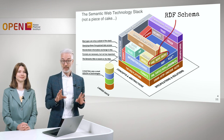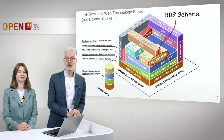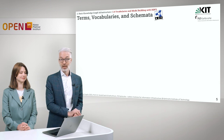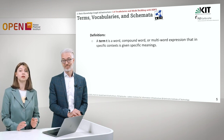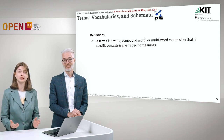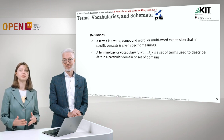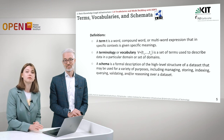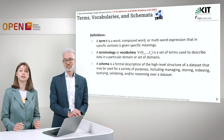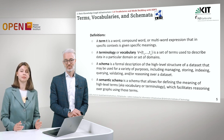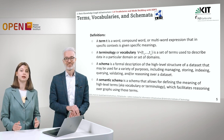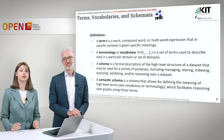This means we are now in the Semantic Web Technology Stack on the next level, where we are building models. Here, we are going to talk about RDF Schema. But first, let's go for some definitions. A term is a word, compound word, or multi-word expression that in a specific context is given a specific meaning. A vocabulary is basically a set of terms used to describe data in a particular domain or set of domains. A schema is a formal description of the high-level structure of a data set used for reasoning, validating, querying, and indexing. A semantic schema is a schema that allows for defining the meaning of high-level terms like vocabulary or terminology, which facilitates reasoning over graphs using those terms.